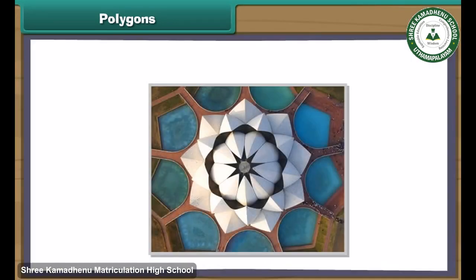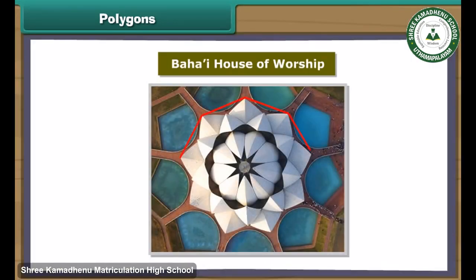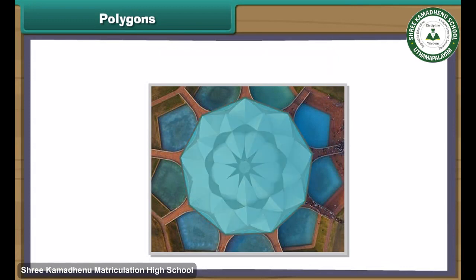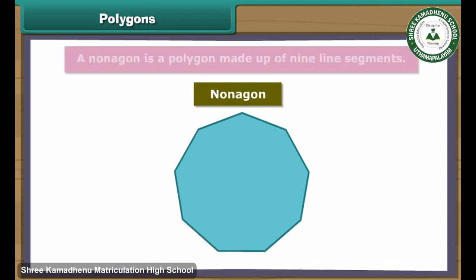Look at this image — it is the Bahai's house of worship. All Bahai's houses of worship have nine sides. A nonagon is a polygon made up of nine line segments.